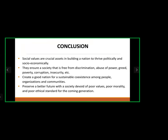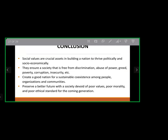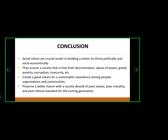In conclusion: social values are a crucial set for building a nation that thrives politically and socioeconomically. They ensure a society free from discrimination, abuse of power, greed, poverty, corruption, and insecurity, creating a good nation for sustainable co-existence among people, organizations, and communities. They also preserve a better future for coming generations, free from poor values, poor morality, and poor ethical standards.